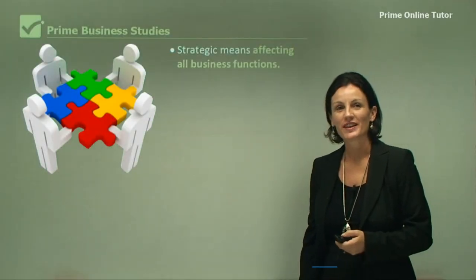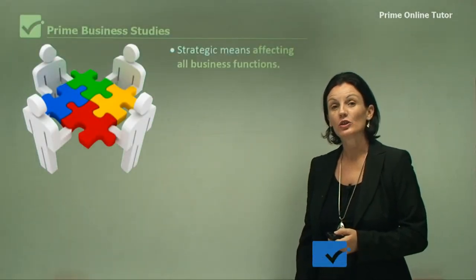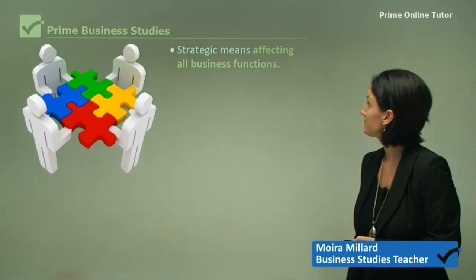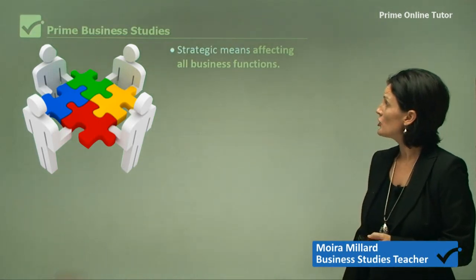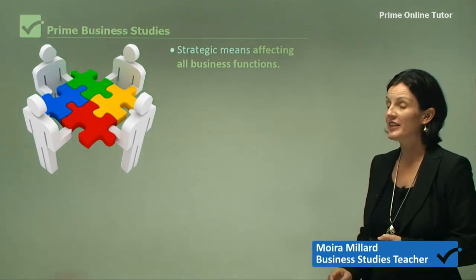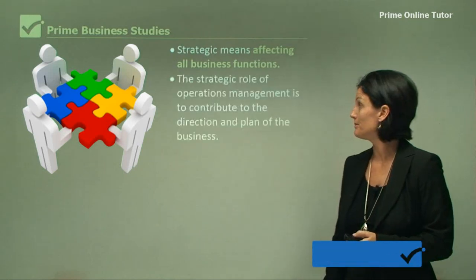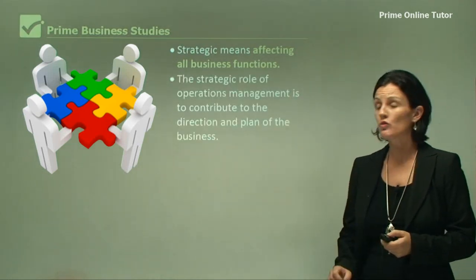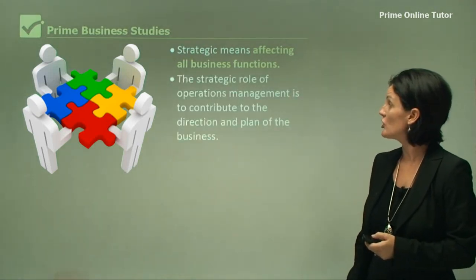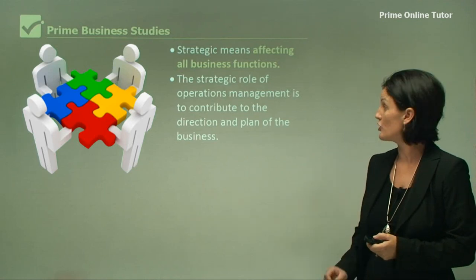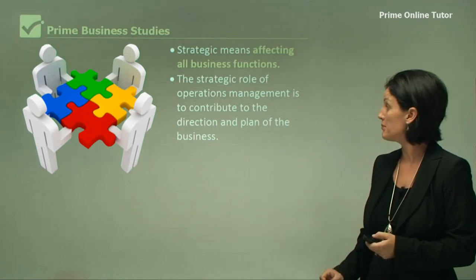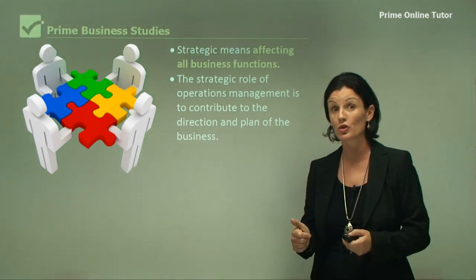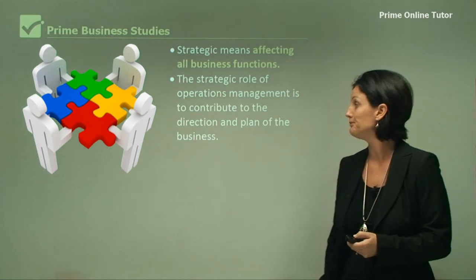Hello everybody. Now we're going to look at the strategic role of operations management. Strategic means affecting all business functions. The strategic role of an operations manager is to contribute to the direction and plan of the business. Now that plan might be a short-term plan or a long-term plan.